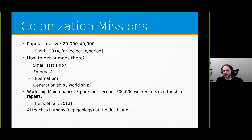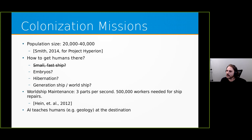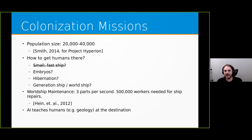I wanted to bring up the point of knowledge loss. When you have a small population of humans in an isolated environment over many generations, you can lose knowledge. One type of knowledge that would be useful at the destination but will probably be lost is geology. If you're in a middle generation, you're not going to be enthusiastic about becoming an expert geologist. AI can play a role in teaching humans things they'll need to know at their destination that will be hard to maintain culturally on the ship.